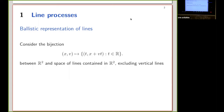We consider a ballistic representation of lines. We will talk about lines in R² and there is a bijection between a two-dimensional point (x, v) and the line defined as x plus vt — so it's a ballistic line, tx plus vt.